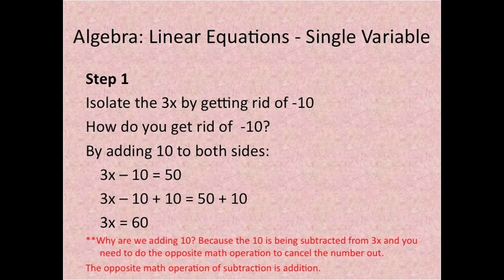Why are we adding 10? Because the 10 is being subtracted from 3x and you need to do the opposite math operation to cancel the number out. The opposite math operation of subtraction is addition.